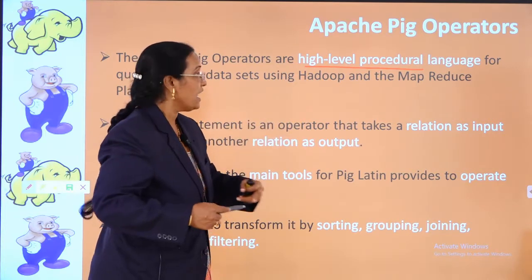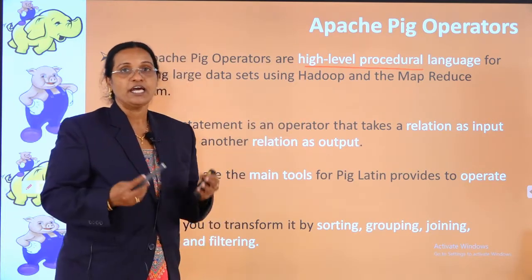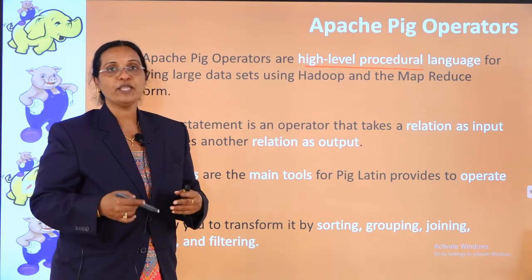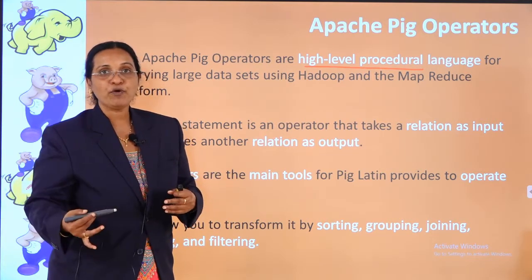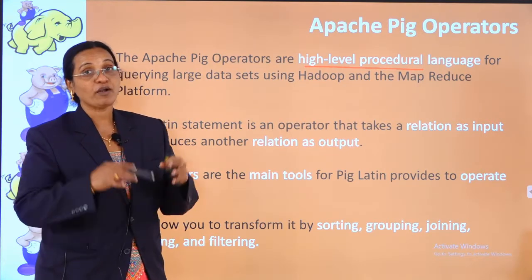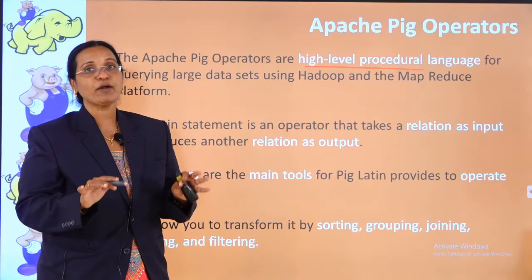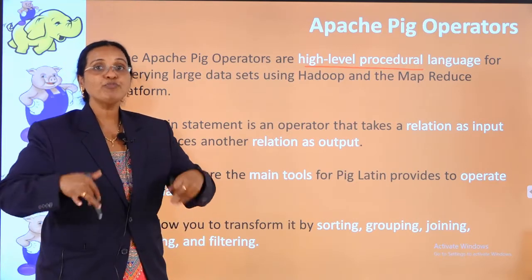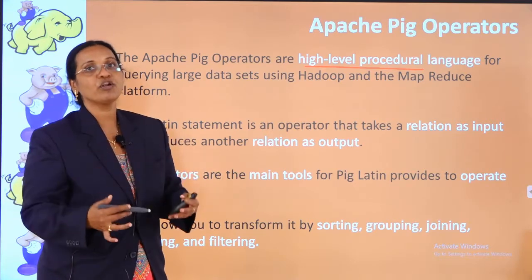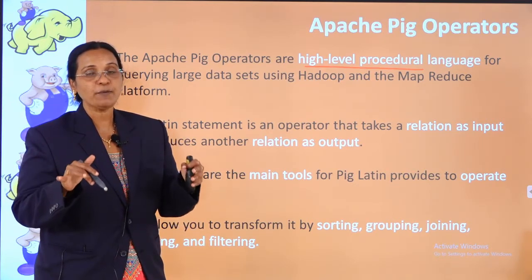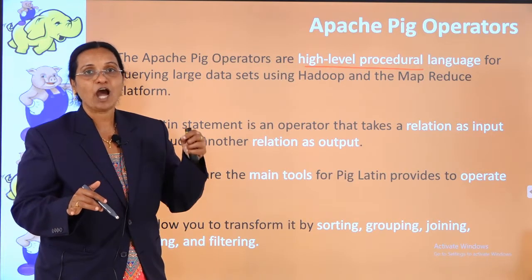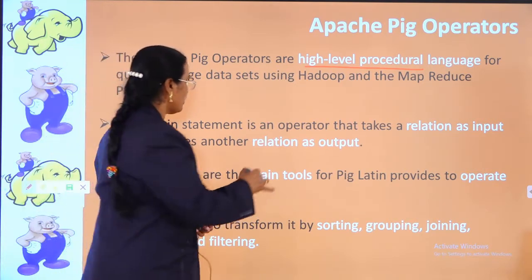A relation is essentially a table. To perform any job, Pig will take the input as a relation or table, and after performing its processing, the output will also be given in the form of a relation. So both input and output are in the form of a relation.